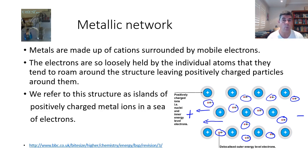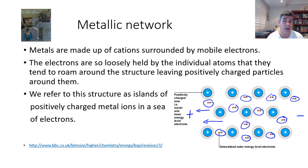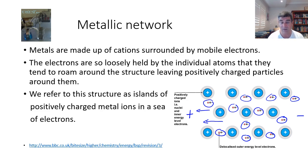The electrons move from one of these islands or cations to the next. If there's no electric field set up, then this is a random movement — there's no current that's been set up. It's only when we set up a potential difference between the ends of a piece of metal that we find the electrons will all flow in the same direction.